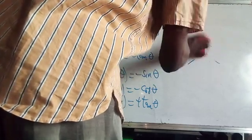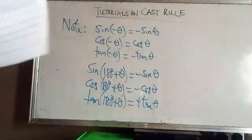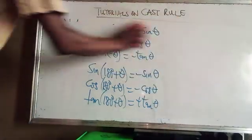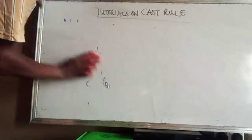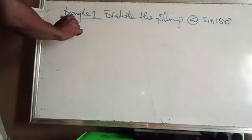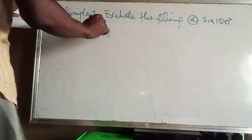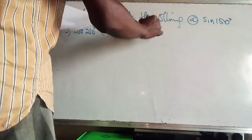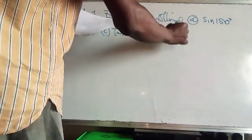Now let's look at some examples. Evaluate the following: A) sin 150°, B) cos 210°, C) tan 300°, and D) cos 420°.